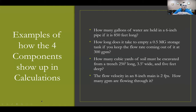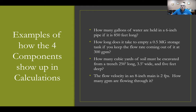Here are examples of the four components showing up in calculations. As a distribution operator, these are the kinds of questions you find yourself asking — and you need those four components to solve them. How many gallons are held in a six-inch pipe 850 feet long? That involves area and depth. How long does it take to empty a half-million-gallon storage tank at 300 gallons per minute? That involves time and volume. How many cubic yards of soil must be excavated from a trench? There's area, distance, and volume.